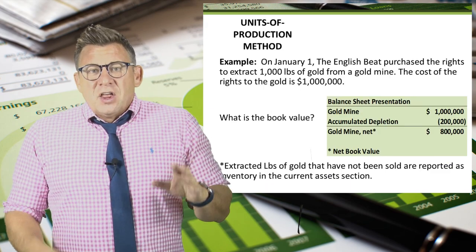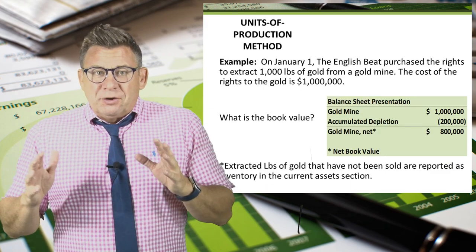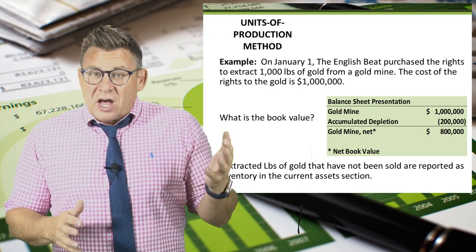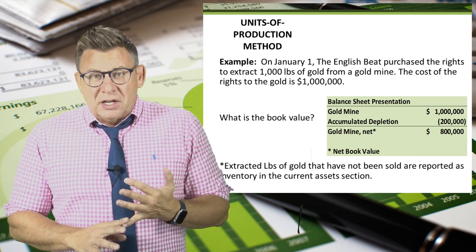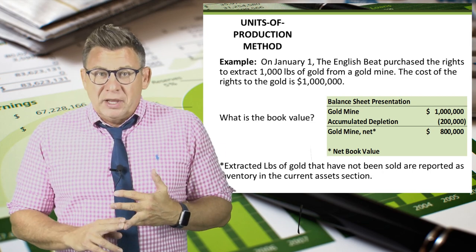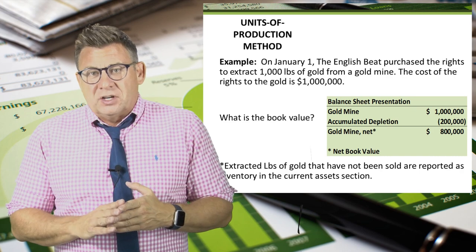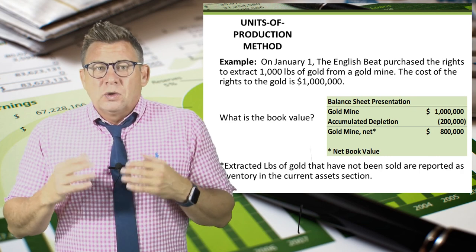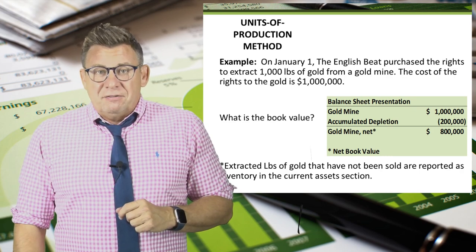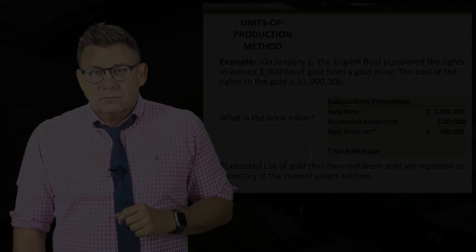Finally, the book value of the gold mine reserve in this example is the cost of $1 million minus the accumulated depletion of $200,000, which equals a net book value of $800,000.